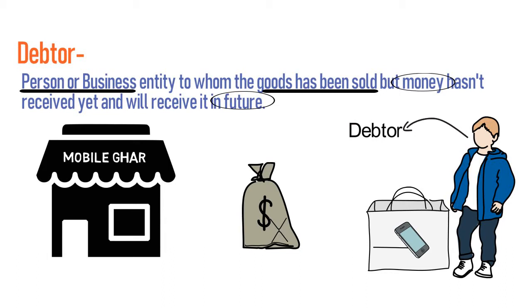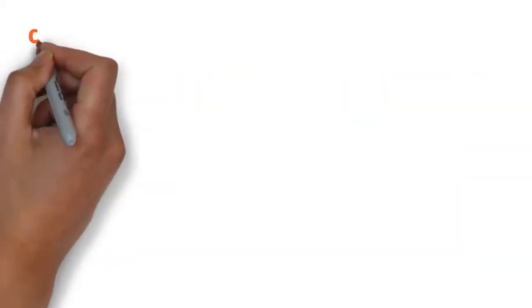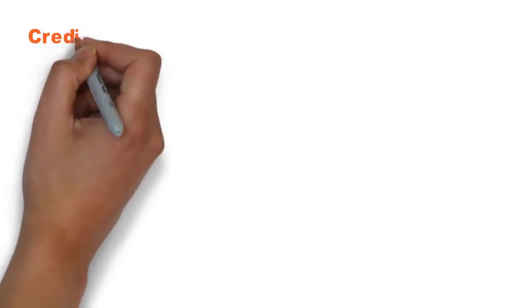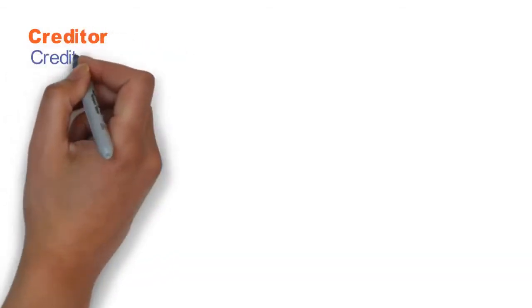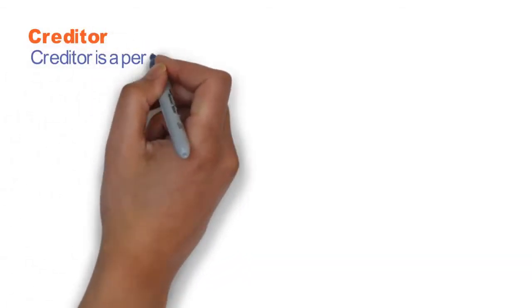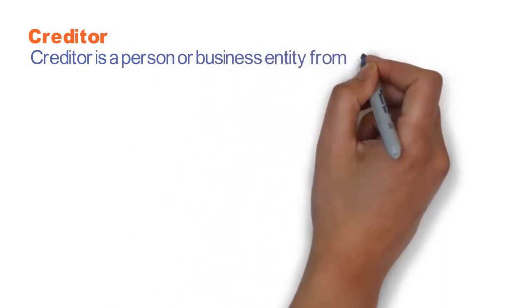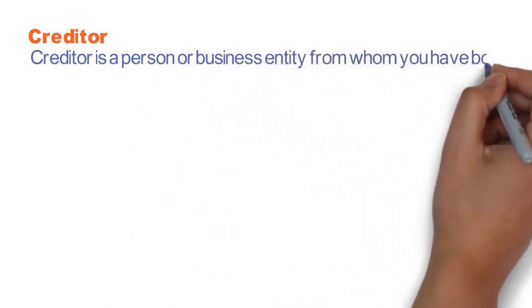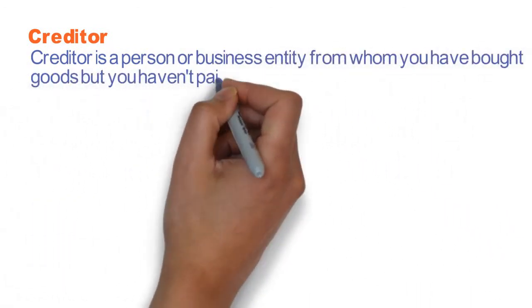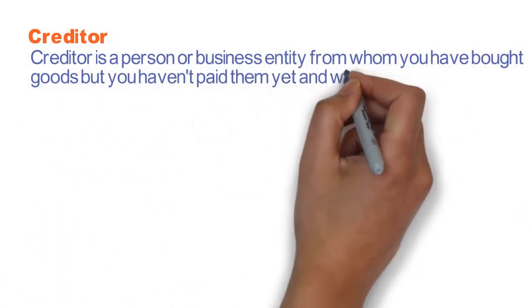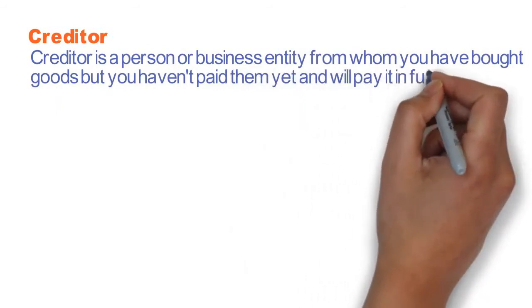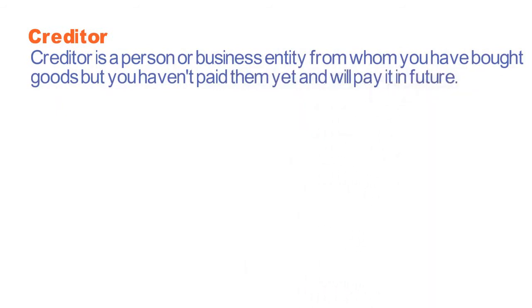What are creditors? A creditor is a person or business entity from whom you have bought goods but you haven't paid them yet, and will pay it in future.